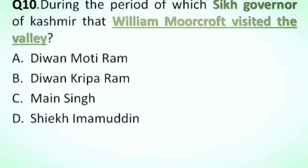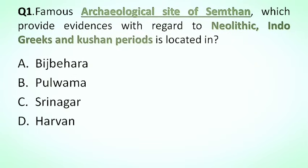Today we are going to discuss the important MCQs of our topic, history of Jammu and Kashmir. Our first question is: the famous archaeological site of Simthan, which provides evidence with regard to Neolithic, Indo-Greek, and Kushan periods, is located in which place? The correct answer is option A, Bishbihara. Simthan is located in Bishbihara in Anantanag district. This site provides a sculptural sequence of Neolithic, Indo-Greek, and Kushana periods.